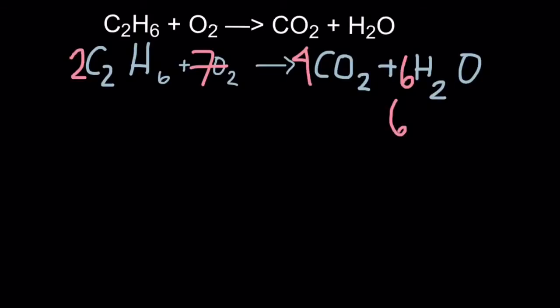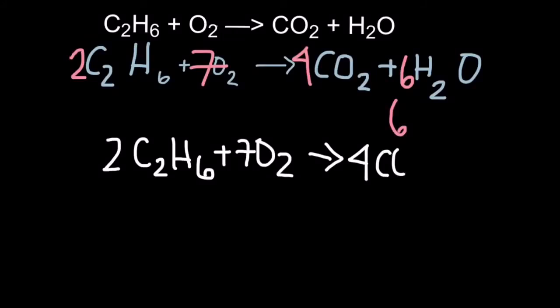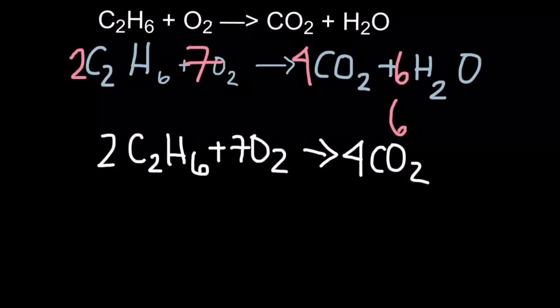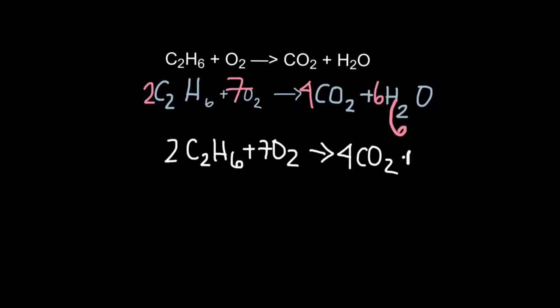So therefore, you would ultimately have 2C2H6 plus 7O2 yields 4CO2 plus 6H2O.